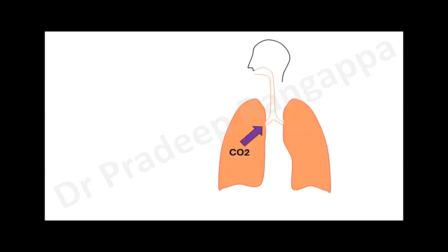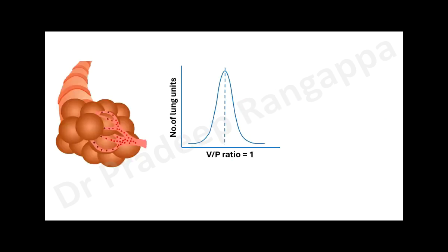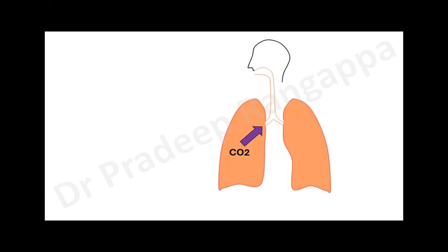This is how respiratory failure sets in. We spoke about oxygenation and its determinants: alveolar oxygen, diffusion, ventilation-perfusion matching. What about the variables that influence elimination of carbon dioxide? Our breathing involves taking in oxygen and getting carbon dioxide out. To understand CO2 elimination, you need to understand alveolar ventilation — alveolar ventilation determines your elimination of carbon dioxide.